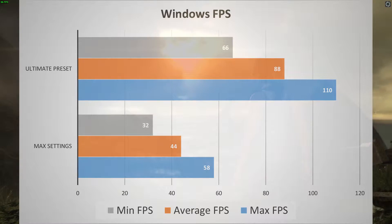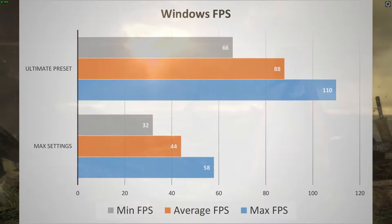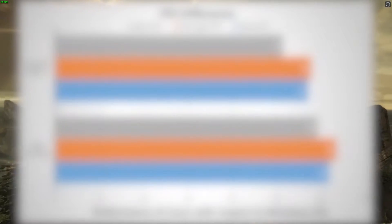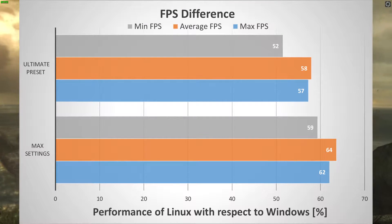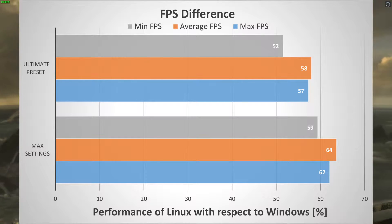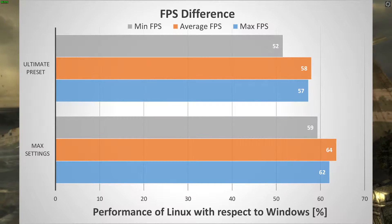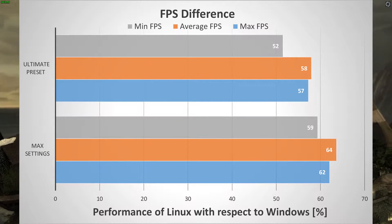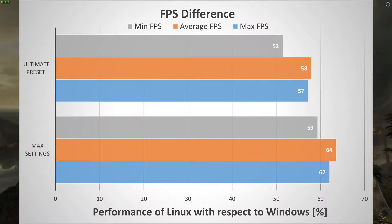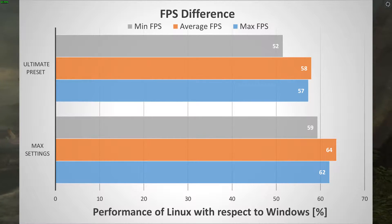On the ultimate preset, 51 FPS is totally acceptable. If we look at the percentage of Windows performance you get on Linux, we see that using the ultimate preset we get around 58 to 60% of the performance. And on max settings, we get around 60 to 65% of the Windows performance when running Tomb Raider on Linux.